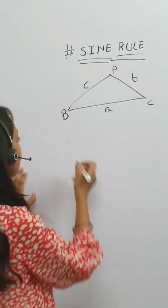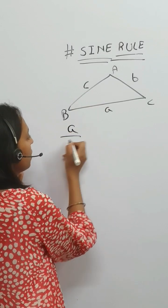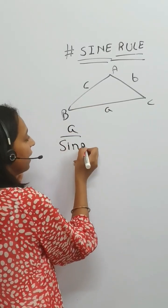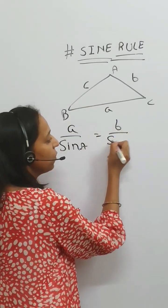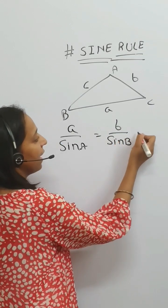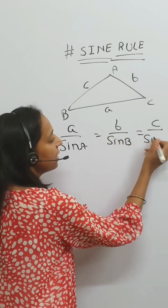So how we write the sine rule: a over sine A equals b over sine B equals c over sine C.